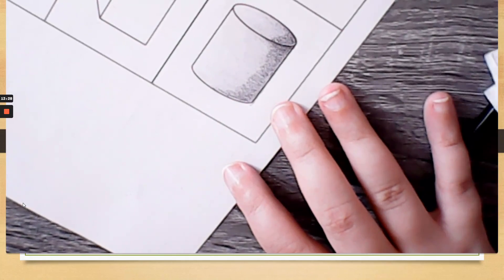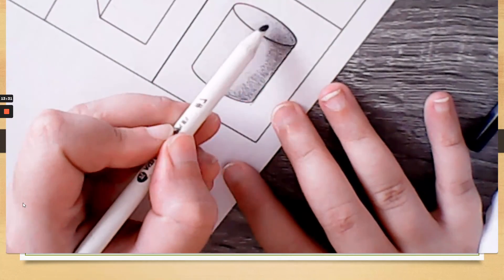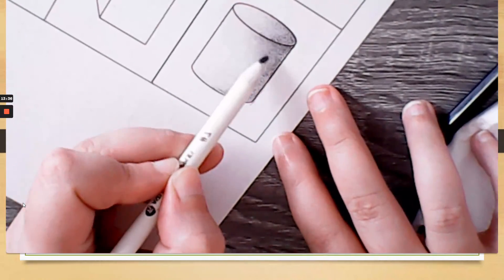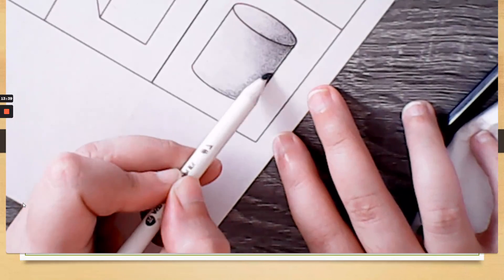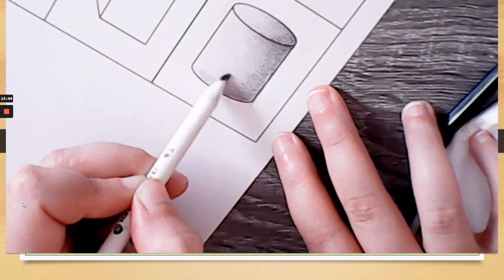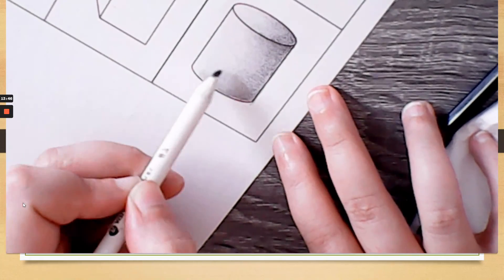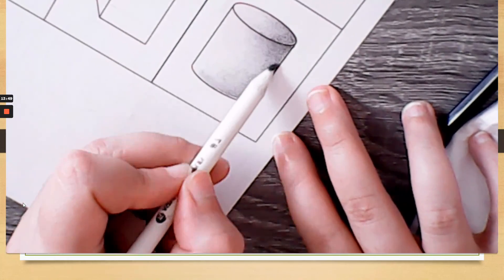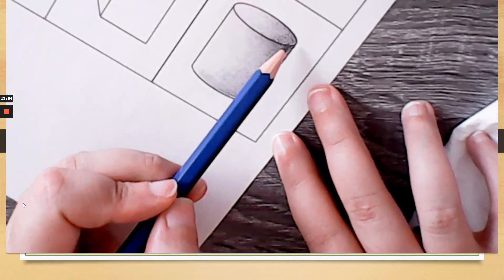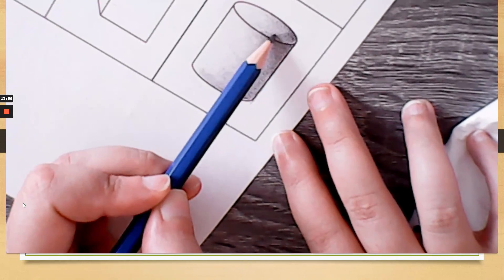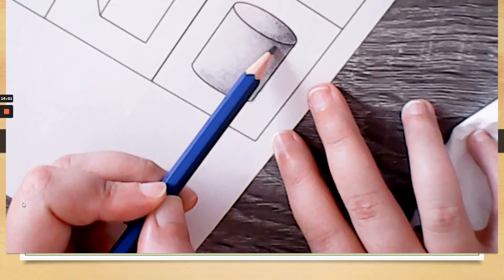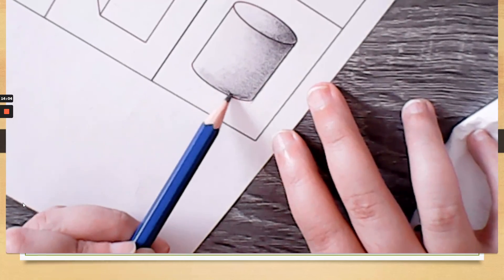So from there, I'm going to blend it out. We're going in one direction. Make it a little bit smoother. And you just kind of have to keep going until you get the right values for your shape and your lighting.